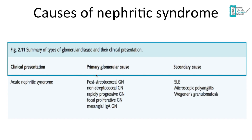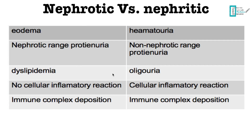Here is a quick comparison between nephrotic and nephritic syndrome. The main complaint in nephrotic is edema; in nephritic the most common complaint is hematuria. Nephrotic patients have nephrotic-range proteinuria — above 3.5 grams per day — while nephritic patients have non-nephrotic range, below 3.5 grams per day. Nephrotic patients develop dyslipidemia; nephritic patients also develop oliguria. Nephrotic syndrome shows no cellular inflammatory reaction, while nephritic syndrome does show a cellular inflammatory reaction. Both will have immune complex deposition.